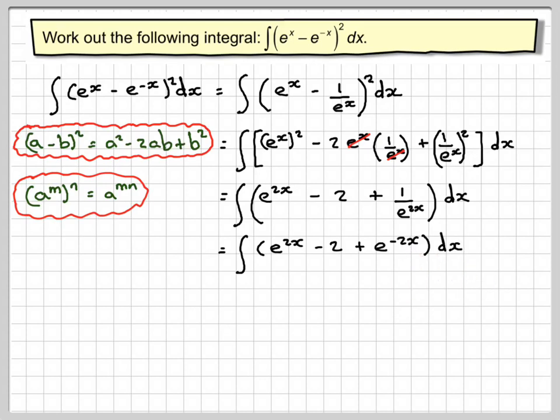Now integrate. d/dx of e to the 2x is 2 e to the 2x. So when we integrate this we're going to need to put a half in front because when we differentiate back we get a 2. 2 divided by 2 that disappears, we get back to what we started with.